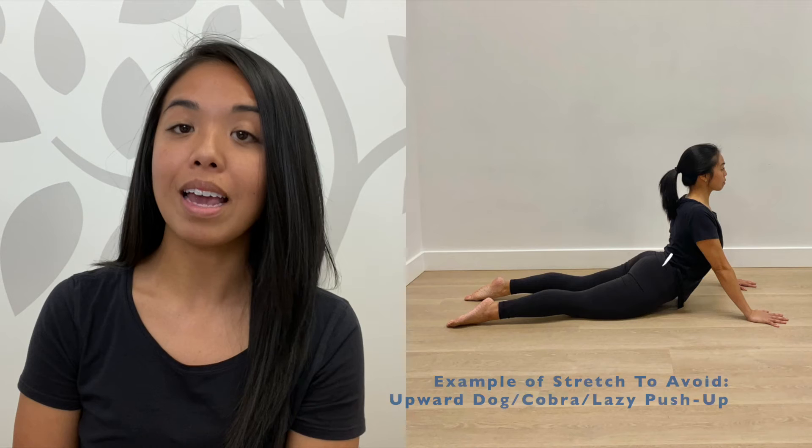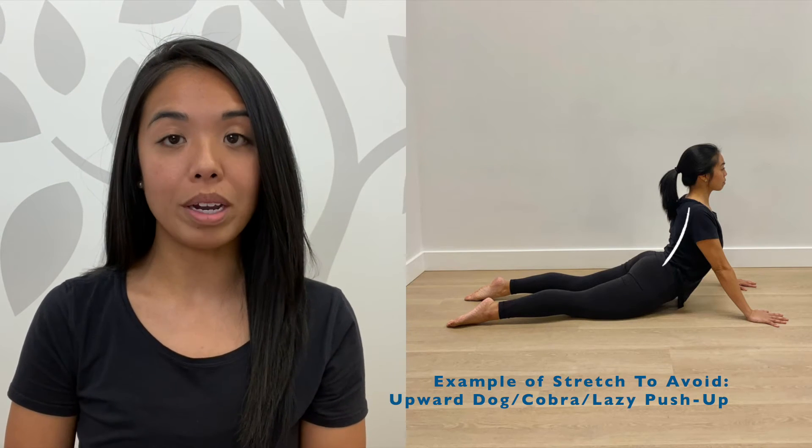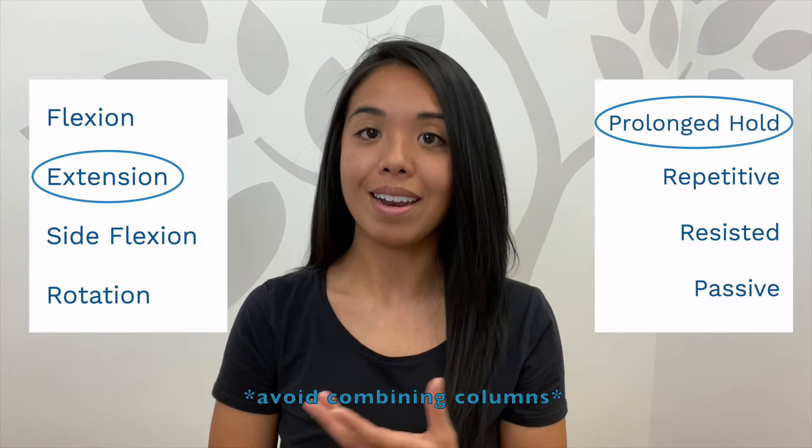Another example of a stretch to avoid if you have scoliosis: the upward dog and the cobra. These are examples of the movement combination prolonged hold and extension. Many people with scoliosis often have vertebral wedging from back to front, meaning the front becomes bigger than normal, which causes them to lose the gentle curve in the upper back and actually become too flat. So hanging out in an extended position for a long time further encourages those vertebrae to shift forward, which is more into the curve.